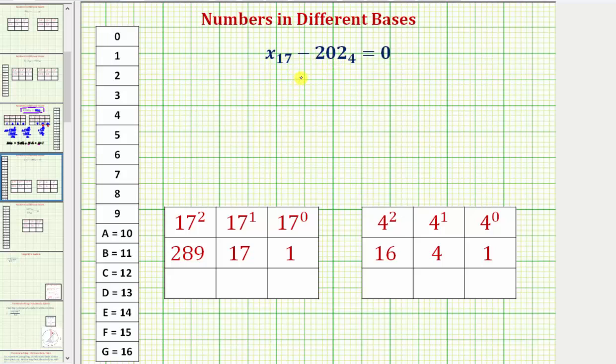This would give us the equation x base 17 equals 2, 0, 2 base 4. Now let's rewrite 2, 0, 2 base 4 in base 10. Remember, because we have base 4, the place values are powers of 4 as we see here.